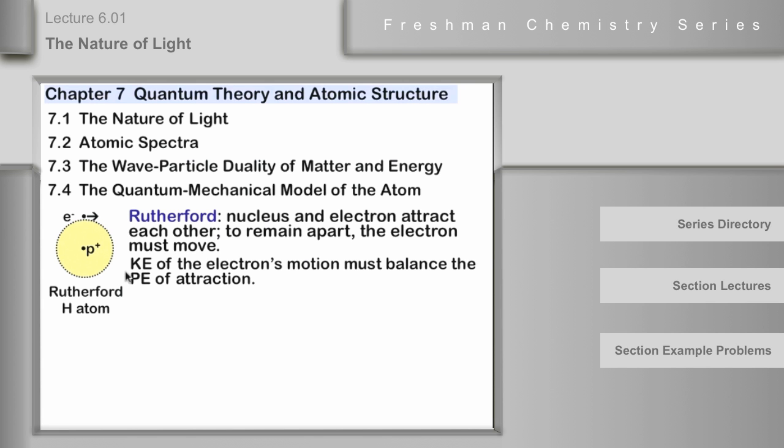Basically, the kinetic energy of the electron's motion would have to balance out the potential energy of the attraction of negative and positive charges. Well, that's alright for planets. But it does not address the general question of why the electron couldn't move a little closer and become more stable.